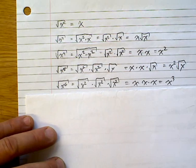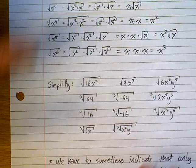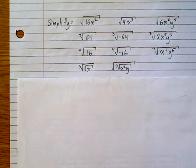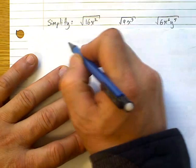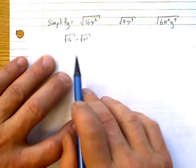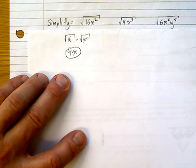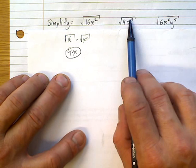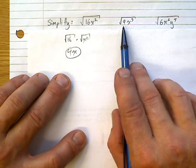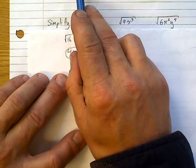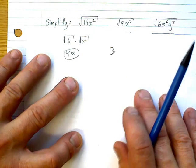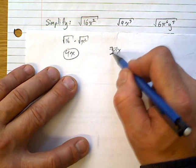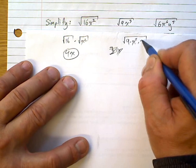Let's go through examples. √(16x²): think of it as √16 × √(x²) — both perfect squares — so it's simply 4x. For √(9x³): the square root of 9 is 3; x³ breaks into x² · x, so √(x²) = x comes out, leaving √x inside. Answer: 3x√x.